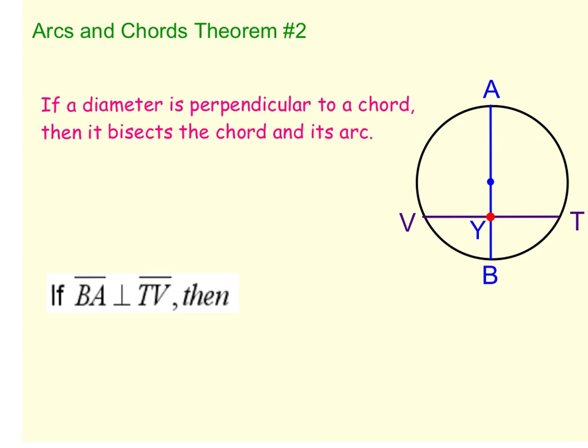This chord goes from V to T, and intersects the diameter at Y. So we have diameter AB, chord VT, and they intersect at point Y. Now, also copy down what theorem number two is. It says that if a diameter is perpendicular to a chord, so let's stop for a second and also put on our picture a 90-degree angle.